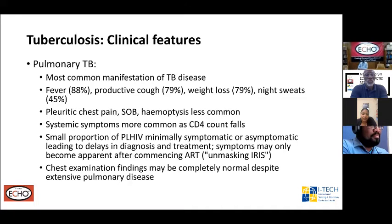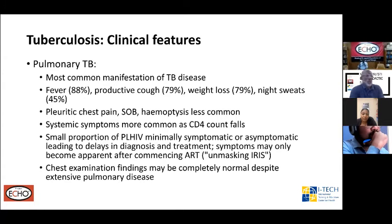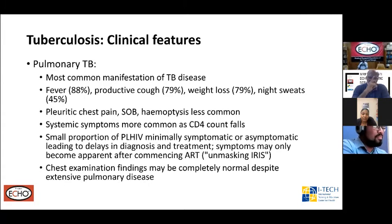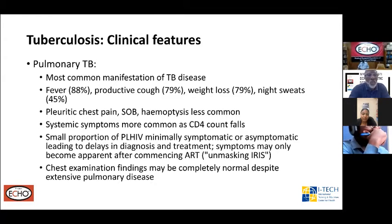The clinical manifestations of pulmonary disease — this is the most common manifestation of TB. The typical four symptoms are fever, a non-productive cough, night sweats, and weight loss. Pleuritic pain, shortness of breath, and hemoptysis are less common. Systemic symptoms like night sweats and weight loss tend to become more common as the CD4 count falls. A small portion of persons manifest very few, if any, symptoms.